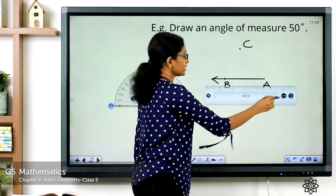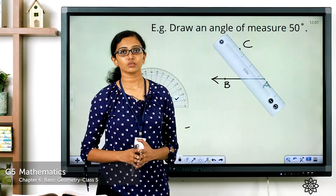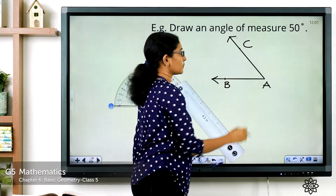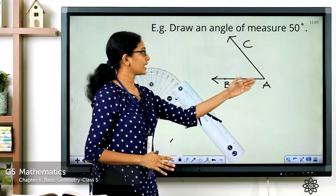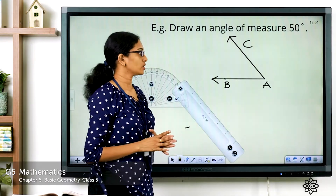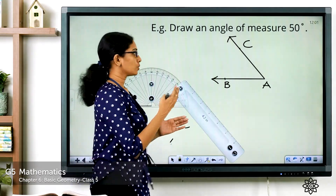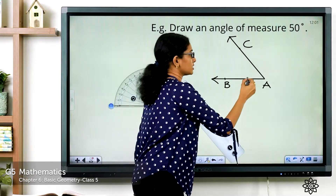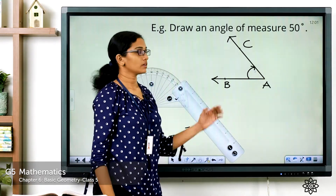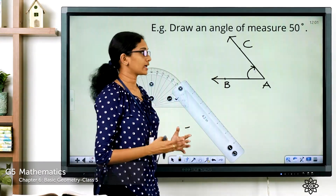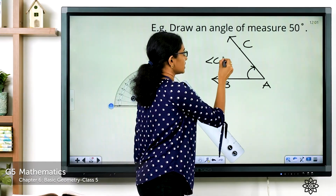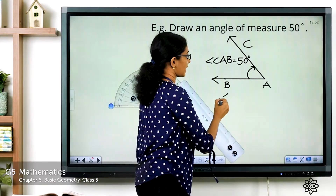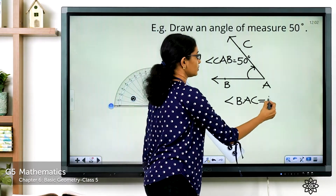The next step is to join points A and C. Place the ruler properly and join A and C. Set aside the ruler and draw the arrow mark. We have drawn angle CAB or angle BAC which measures 50 degrees. Since we used the outer scale, the arrow showing the measurement should be pointed towards the right. Write: angle CAB is equal to 50 degrees, or angle A is equal to 50 degrees.